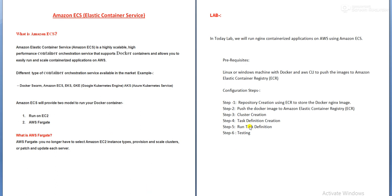In today's lab session, we are going to run an Nginx containerized application on AWS. The prerequisite is that we need to set up one machine with Docker and AWS CLI — we need an Nginx Docker image so we can push it to Amazon Elastic Container Registry. The configuration steps are: first, repository creation in ECR and pushing the Nginx image; then cluster creation; then task definition creation and running the task; and finally testing.